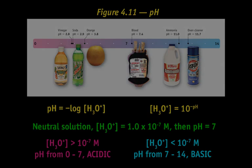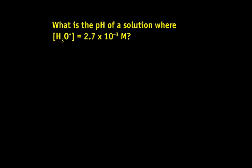Let's do a few examples of these calculations. Suppose you have a solution whose hydronium ion concentration is 2.7×10^-3 moles per liter. What's the pH of that solution?